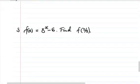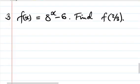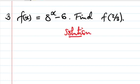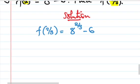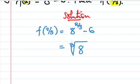Final question: it's about mapping functions. The function f(x) equals 8 to the power x/3 minus 6. We should find f(2/3). Solution: f of 2/3, we put 2/3 in for x. So it's 8 to the power 2/3 minus 6.